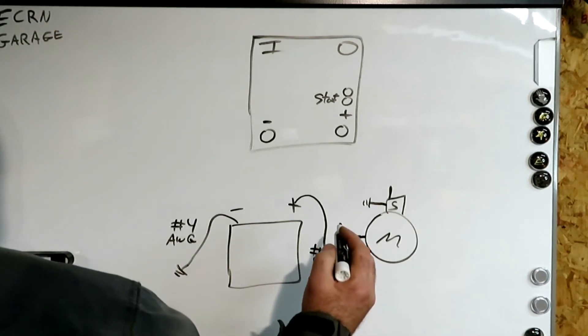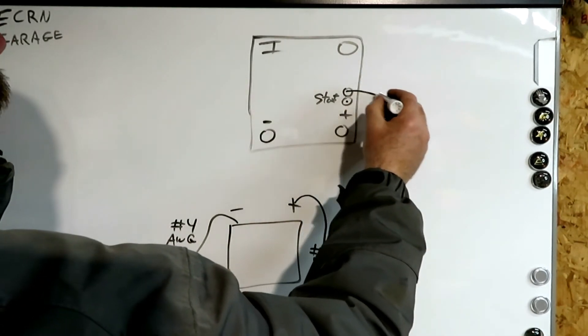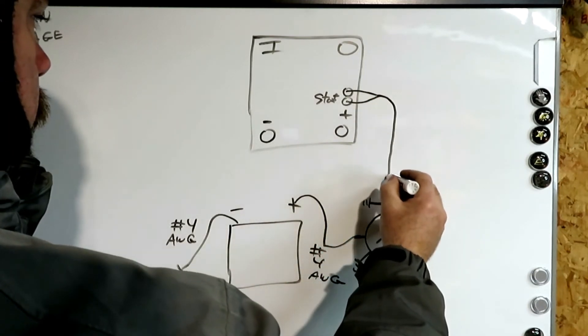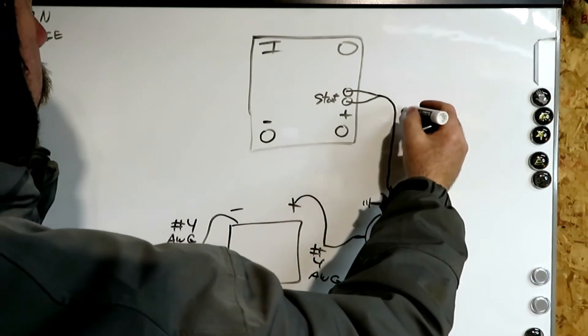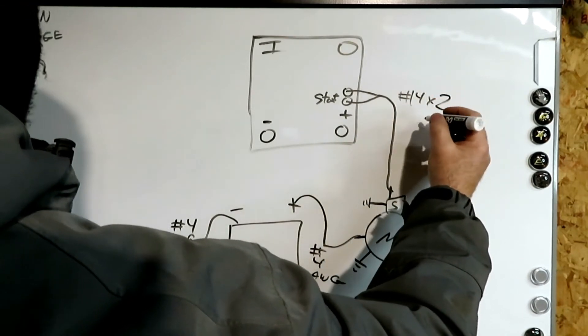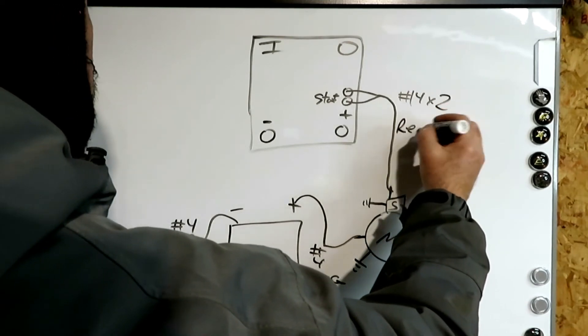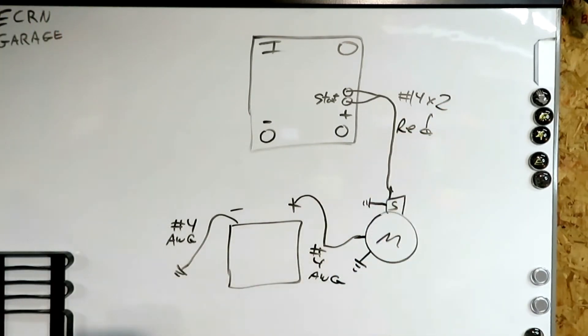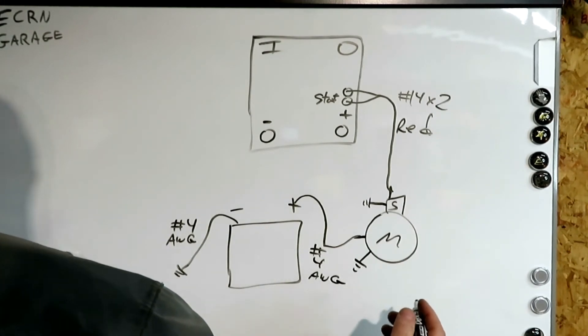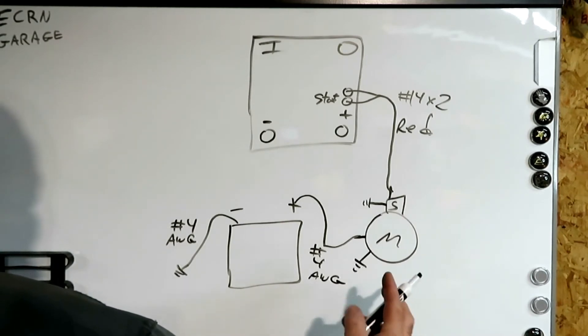So now, for the solenoid switch, we have two start terminals. And I brought two number 14s down to the start solenoid. The number 14 times two. And I didn't mark a color, they were red, but I didn't give it a number because it was really close on the actual bike, so it's not marked at all. So there's all our basic wires for that, for the starter.